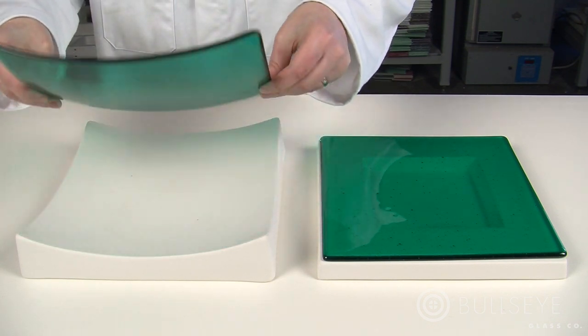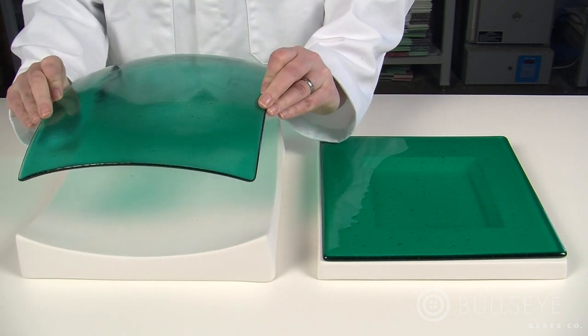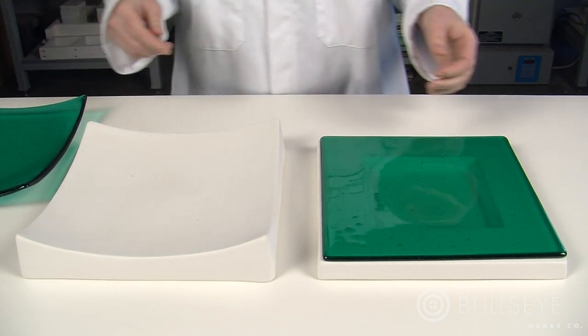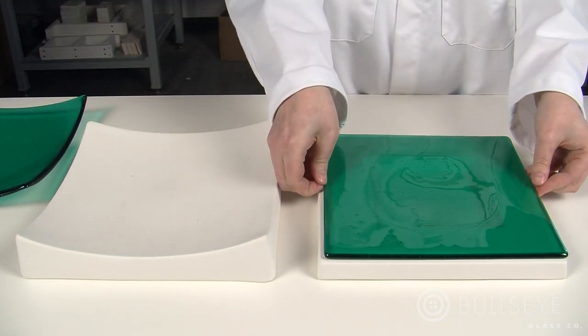After heating to 1180 degrees Fahrenheit and holding for 5 minutes, the piece in the square slumper has conformed to the mold nicely while the other piece has not.